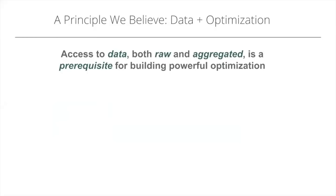One of the principles we believe at Beeswax is that access to data — both raw and aggregated — is a prerequisite for building powerful optimization. You can't do one without the other. Without raw data to understand deeply how the marketplace is performing and aggregated data to make quick decisions, you can't build powerful optimization. That's one of the things that differentiates us: unparalleled access to raw data.